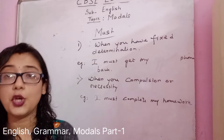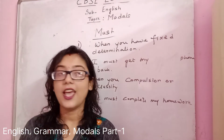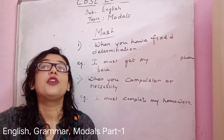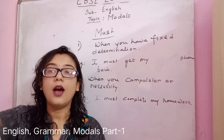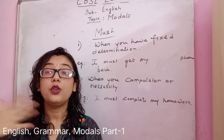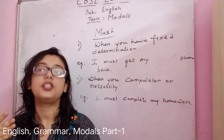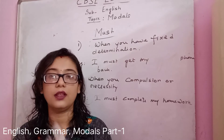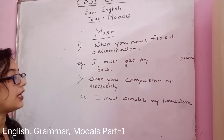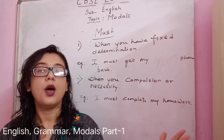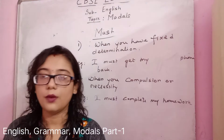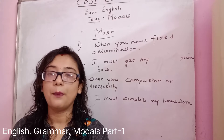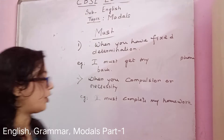When else do you use MUST? When you prohibit someone, when you restrict someone, or when you impose rules and regulations. For example: Students must not loiter in the corridor. Students must not eat inside the classroom. Students must not roam outside the class. So when imposing prohibition and strict restrictions, you use the modal MUST.